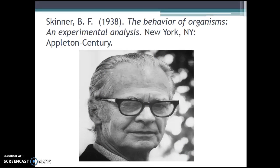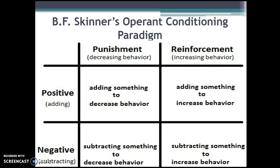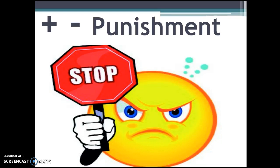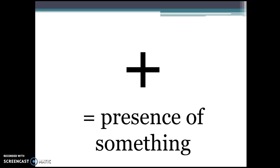He postulated the operant conditioning paradigm, which we will now be discussing, as a means to controlling students' behavior to maximize educational outcomes. Skinner's operant conditioning is characterized simply as rewards and punishments. A reinforcement is used when you want a behavior to continue, like coming to class on time. A punishment is used when you want a behavior to stop, like coming late to class. The positive means the presence of something and can be used with a reward or a punishment. You give a child a cookie as a reward or you spank a child for misbehaving.